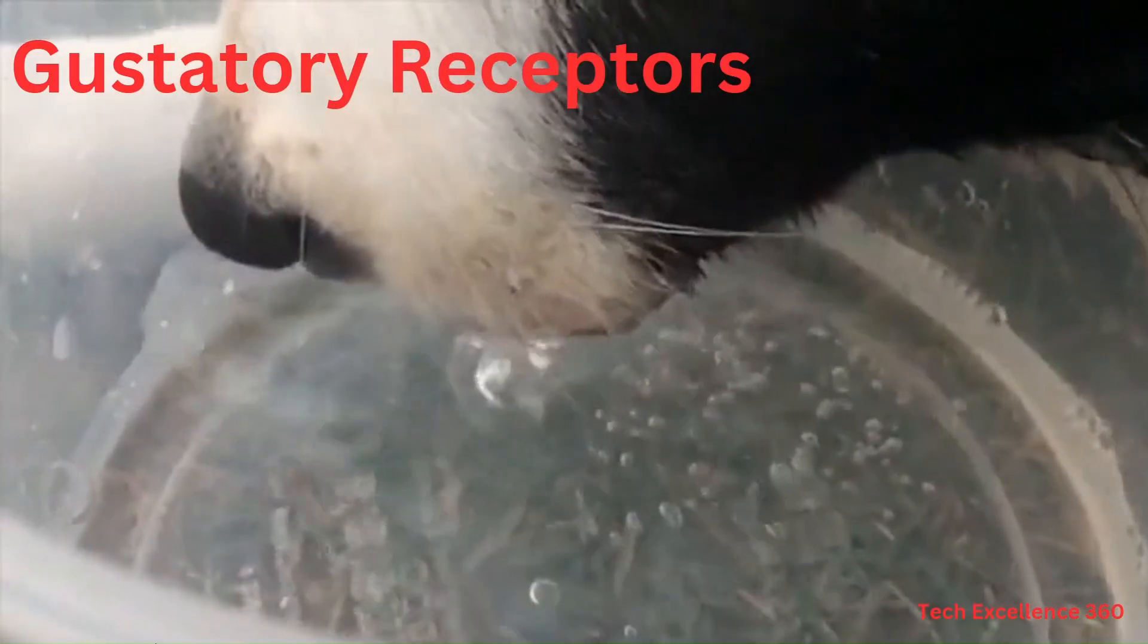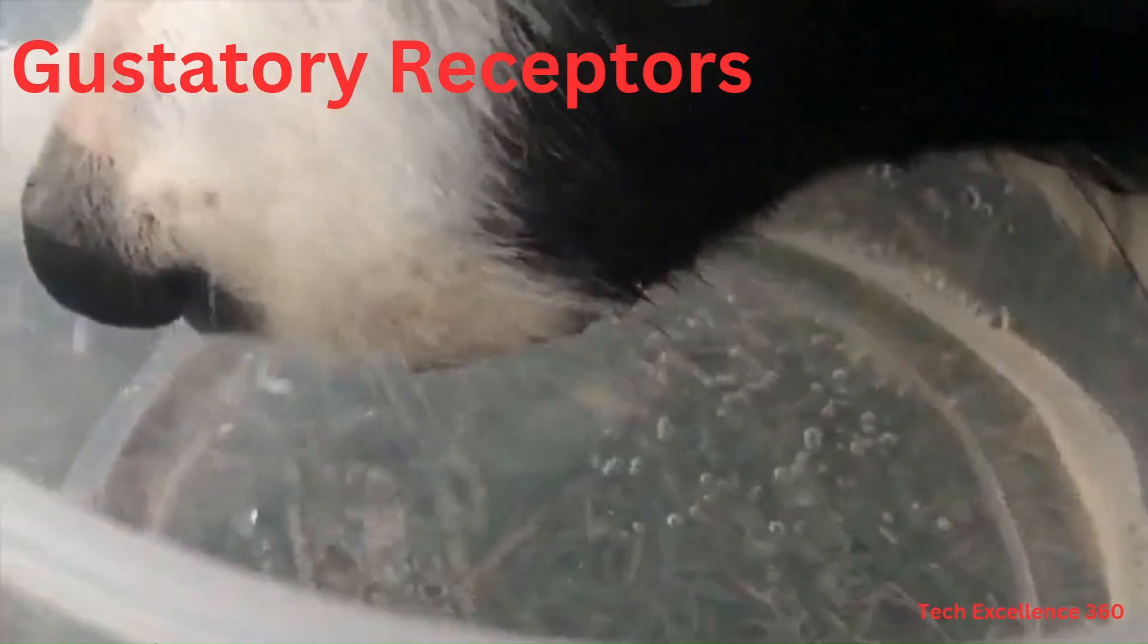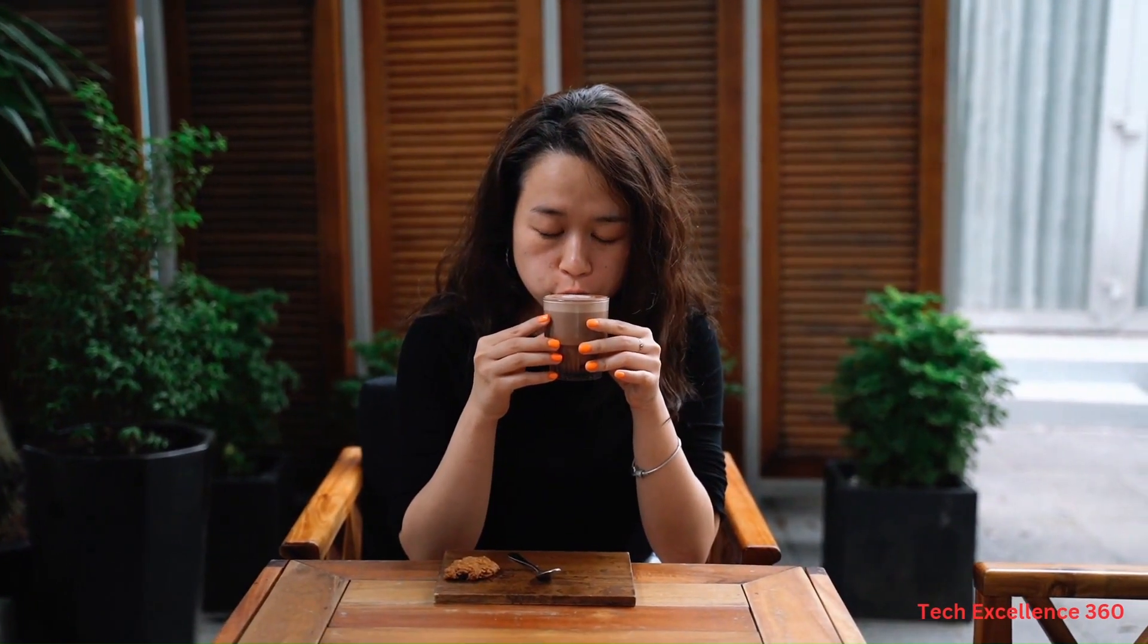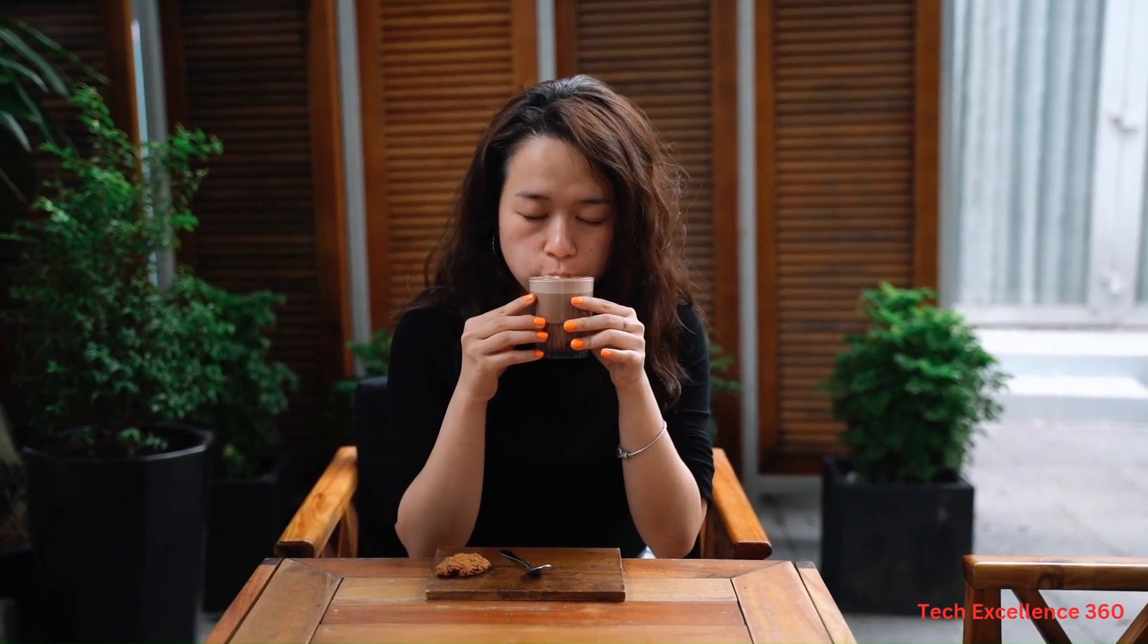Gustatory receptors are responsible for taste reception and are located on the tongue. They help us identify and distinguish between different tastes such as sweet, salty, sour and bitter.